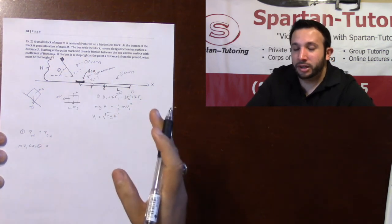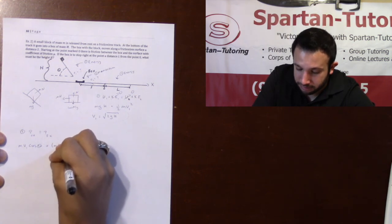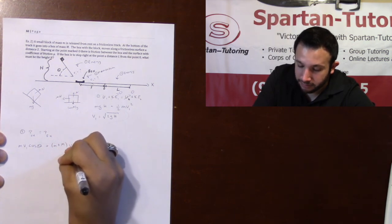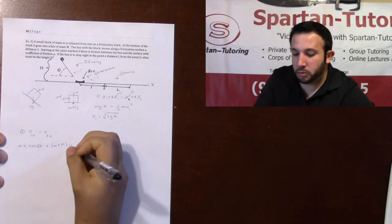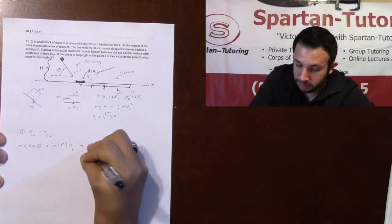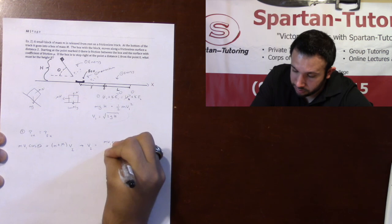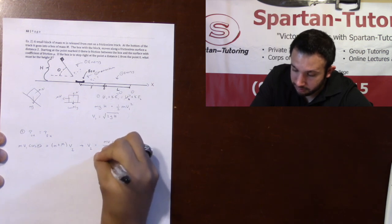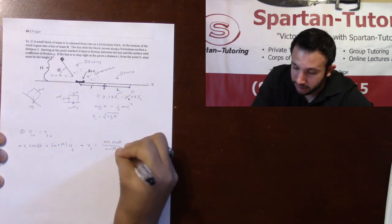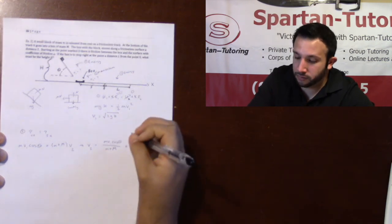And then together, you take the combined masses of your little m plus capital M V2. And V2 represents a velocity immediately after the collision. And so V2 is equal to that little m V1 cosine theta divided by little m plus capital M, which we know what V1 is. V1 is the square root of 2GH.